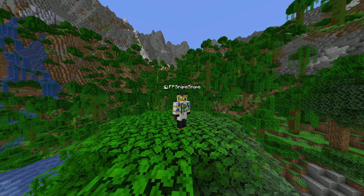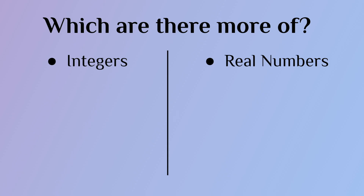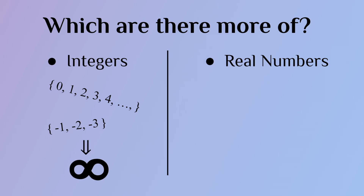If I asked you which are there more of — integers or real numbers — what would you answer? For reference, integers include every whole number and all of their negative counterparts: numbers like 0, 1, 2, 3, 4, all the way to infinity. The negative counterparts like negative 1, negative 2, negative 3 are also integers. Overall, there are an infinite amount of integers.